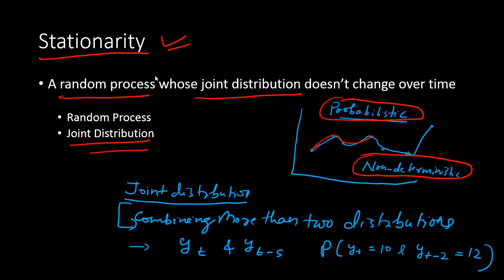What is joint distribution? The joint distribution is nothing but a combination of two or more distributions. When we talk about a single distribution, we talk about one distribution following a certain kind. When we take one data point from one distribution and another from a second, and jointly see how they appear over time, we call that a joint distribution.